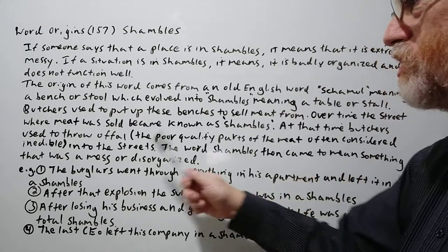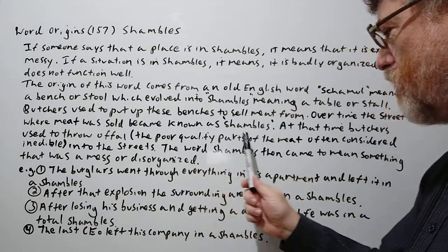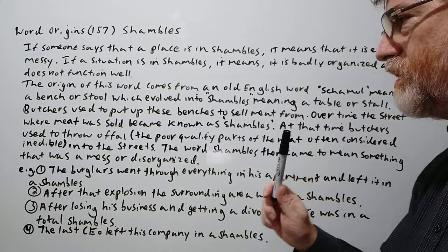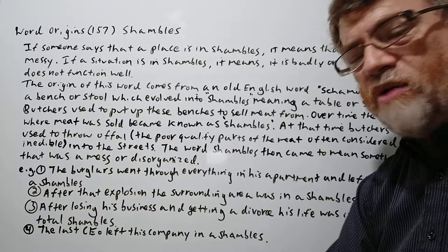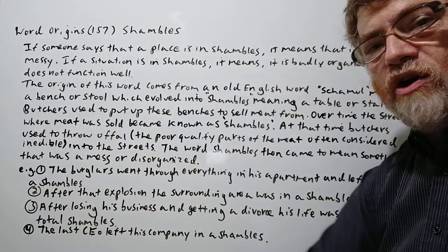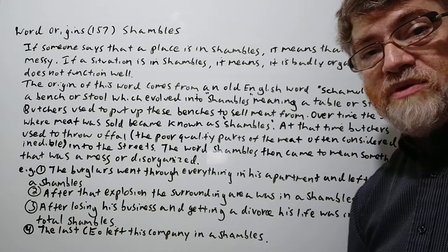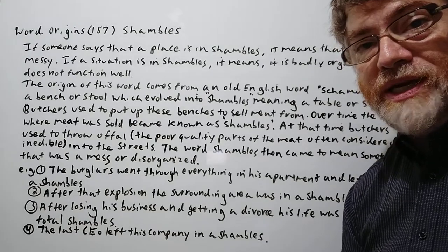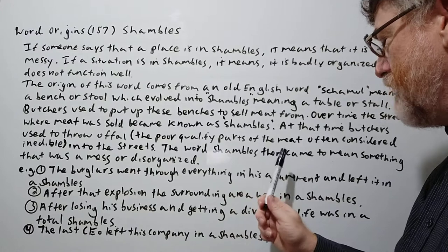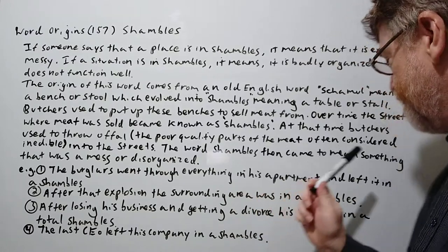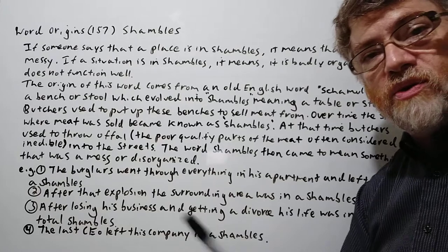At that time, butchers used to throw offal — the poor quality parts of the meat, often considered inedible — into the streets. The parts he figured he couldn't sell, nobody wants, it was like garbage. Maybe he thought the dogs would eat it. The word shambles then came to mean something that was a mess or disorganized.